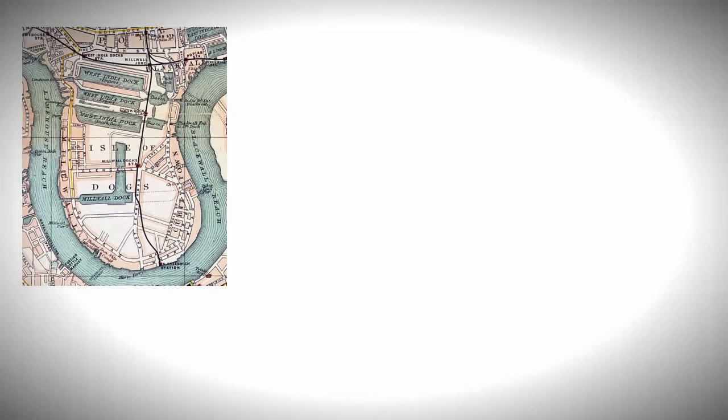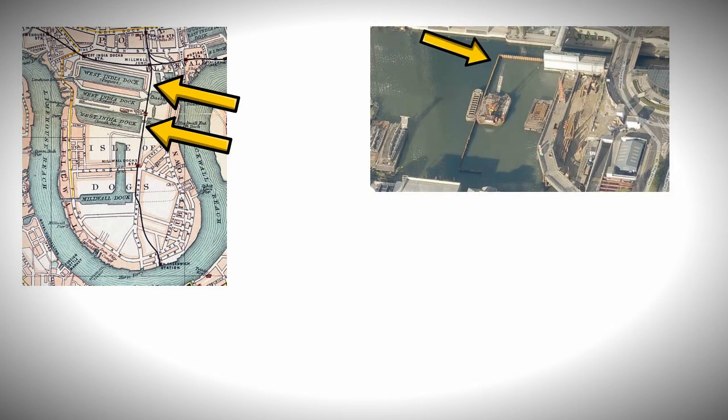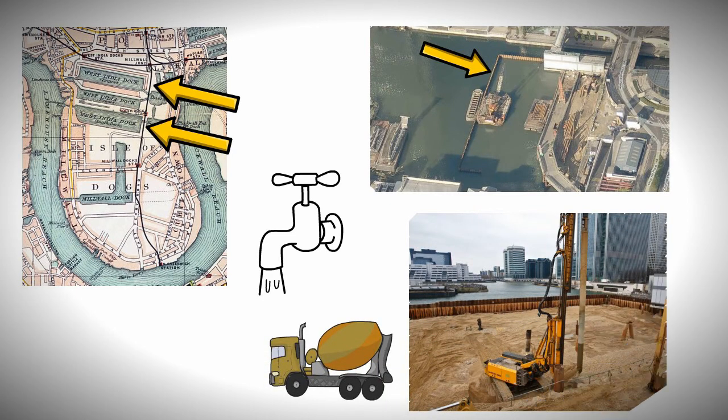As a fair whack of the area was occupied by water, to gain extra space a series of cofferdams were constructed. Water was drained out and then filled in with concrete and soil to ensure it would be solid ground to build on top of.